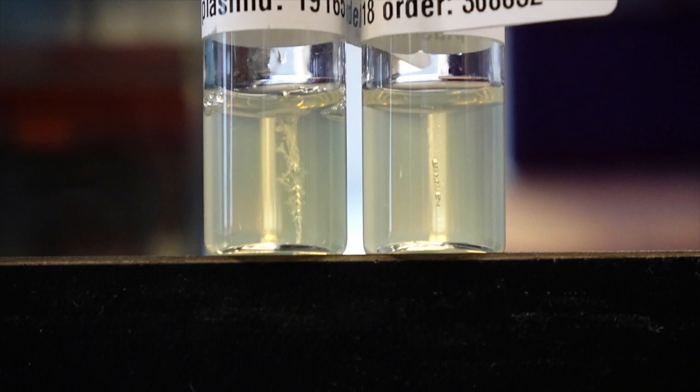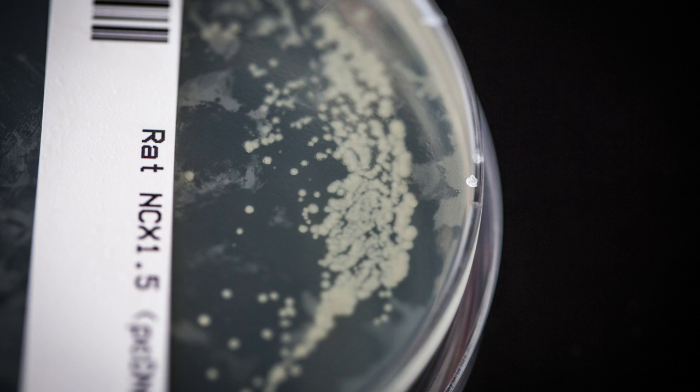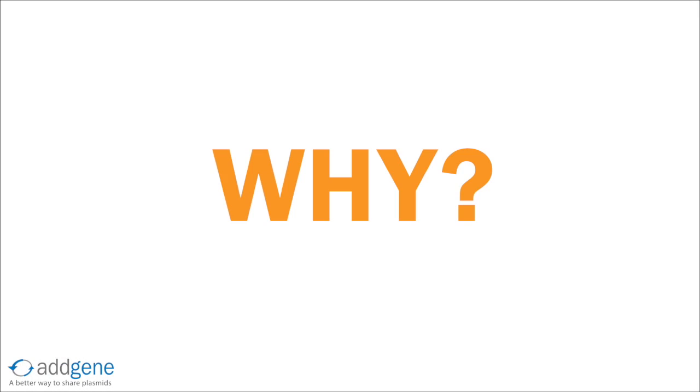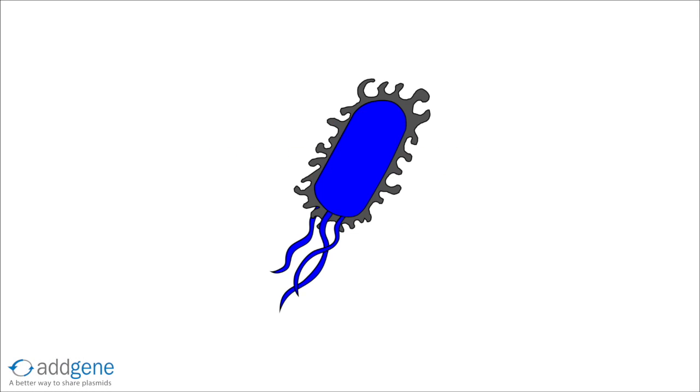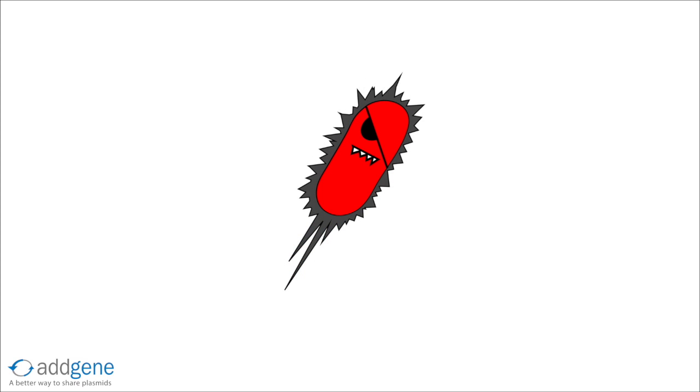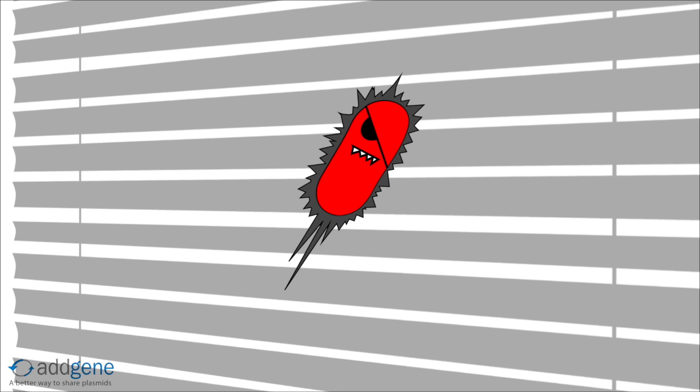When growing bacteria from glycerol stocks or bacterial stabs, it's very important to start liquid cultures from single colonies struck on plates. While the majority of bacterial cells in a stock or stab should be genetically identical, there may be the occasional mutant hidden among the population.